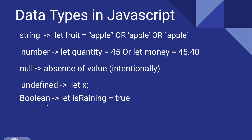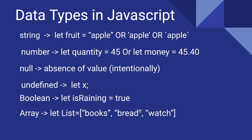Now we have boolean. Boolean is either true or false. For example, if you are building a weather application and need to show whether it is raining — if it is raining, the value is true and you can show certain items to the user. You can use boolean to determine if a certain condition is true or not.